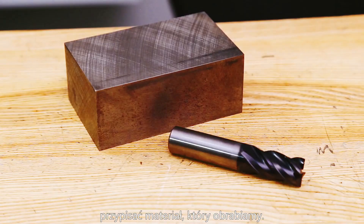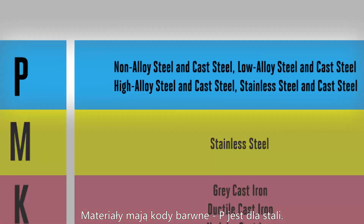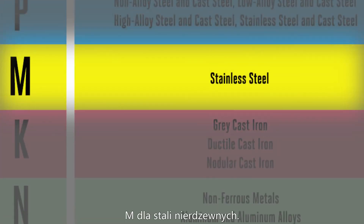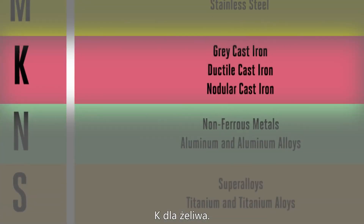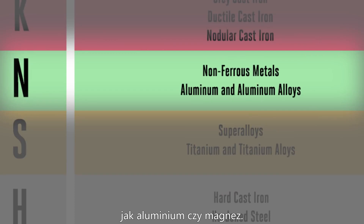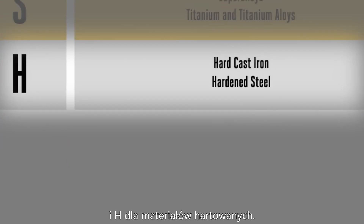Once that catalog is opened up, we're gonna search for the material group section — that tells us what material group our exact material falls into. Our materials are color-coded: P is for steels, M is for stainless steels, K is for cast irons, N is for non-ferrous metals like aluminum or magnesium, S is for super alloys like titanium, and H is for hard cast irons or hardened steels.